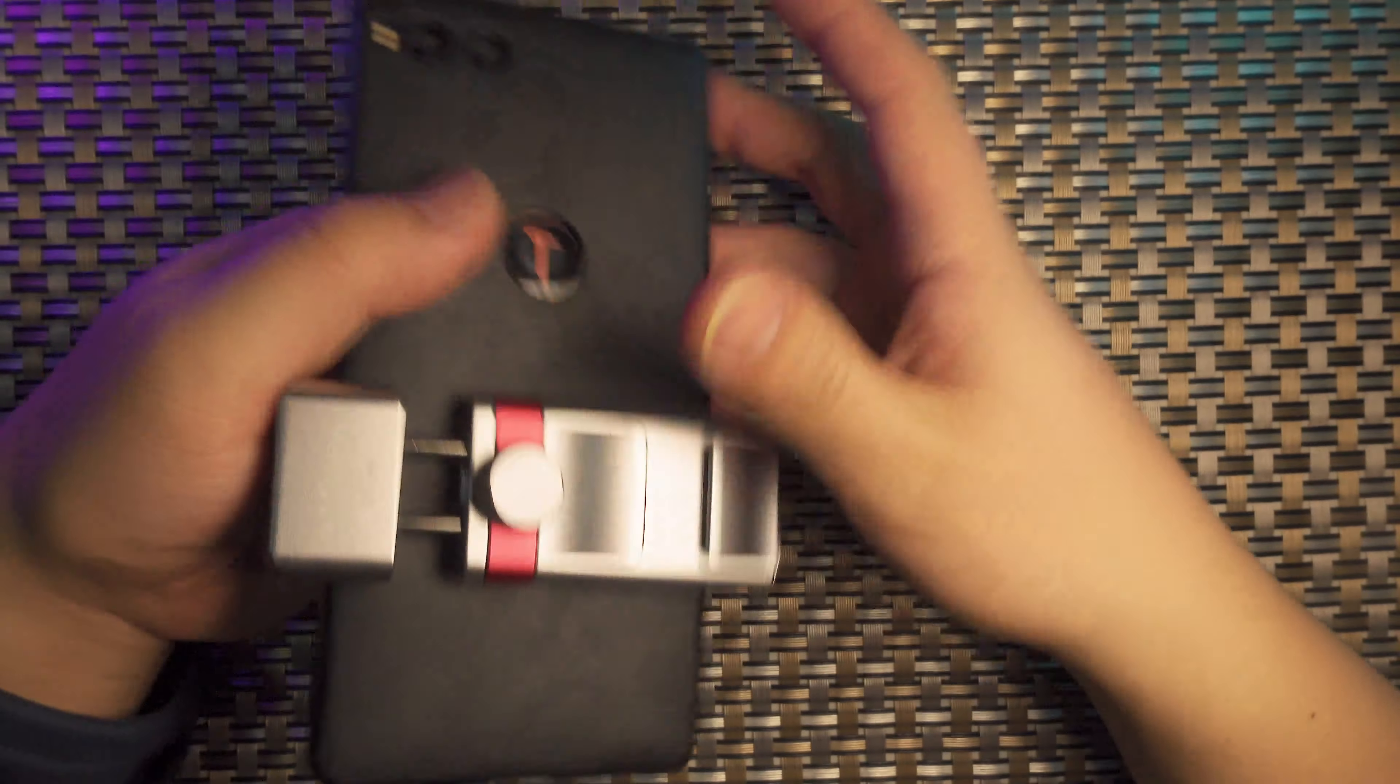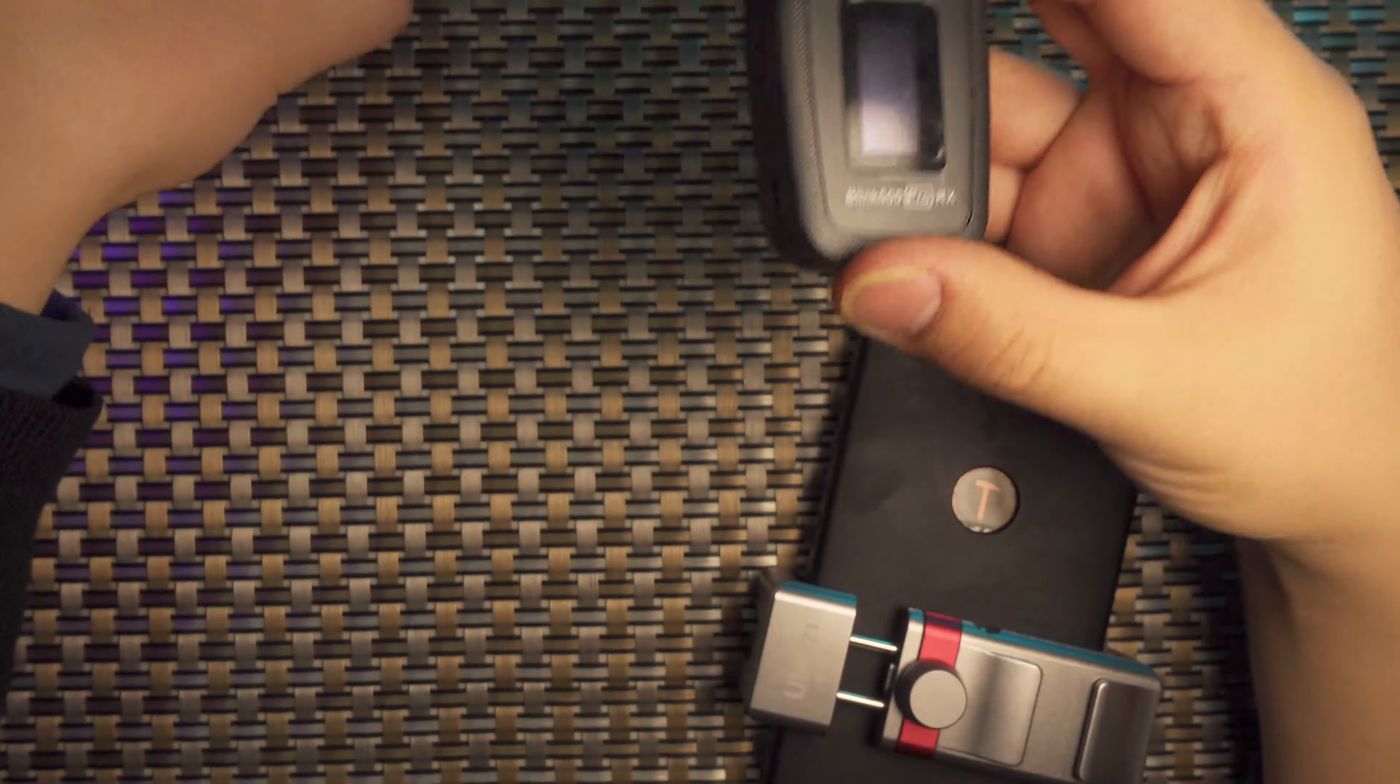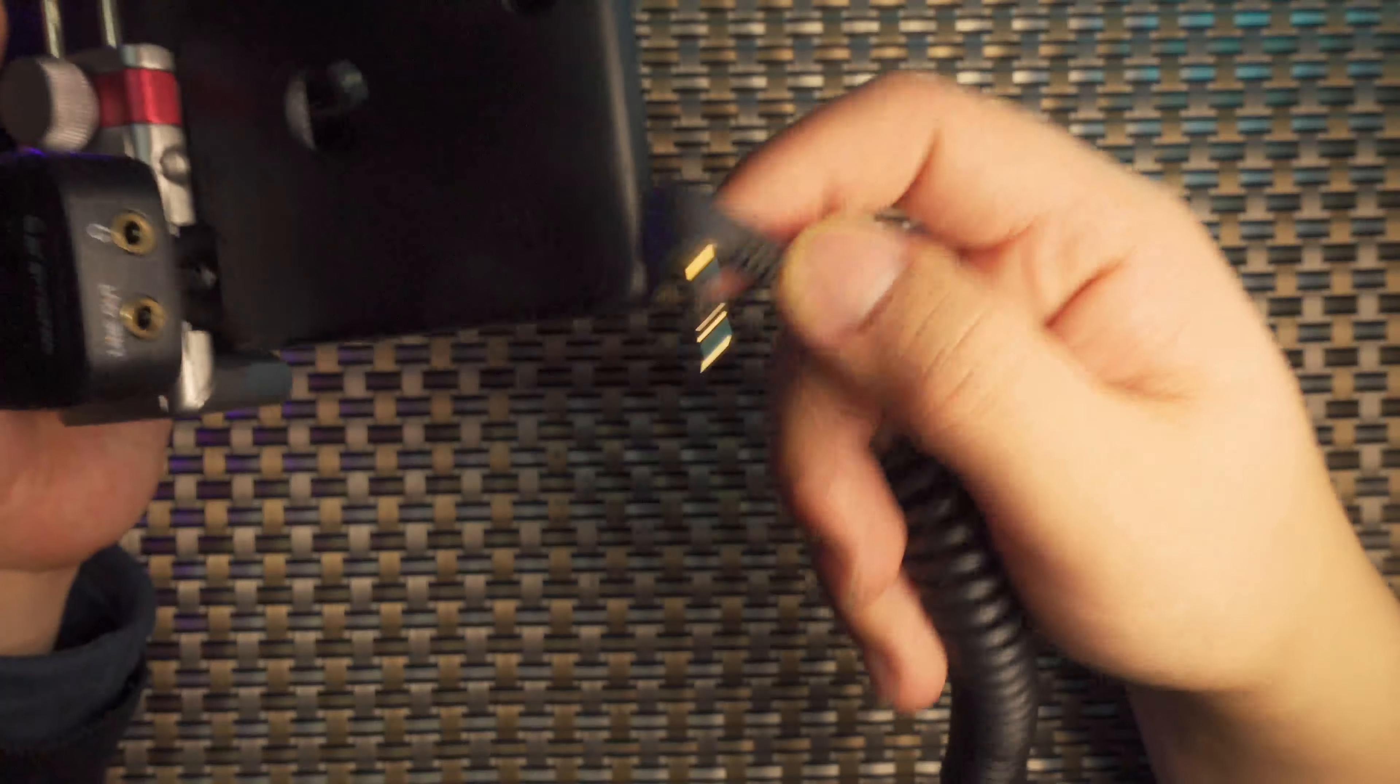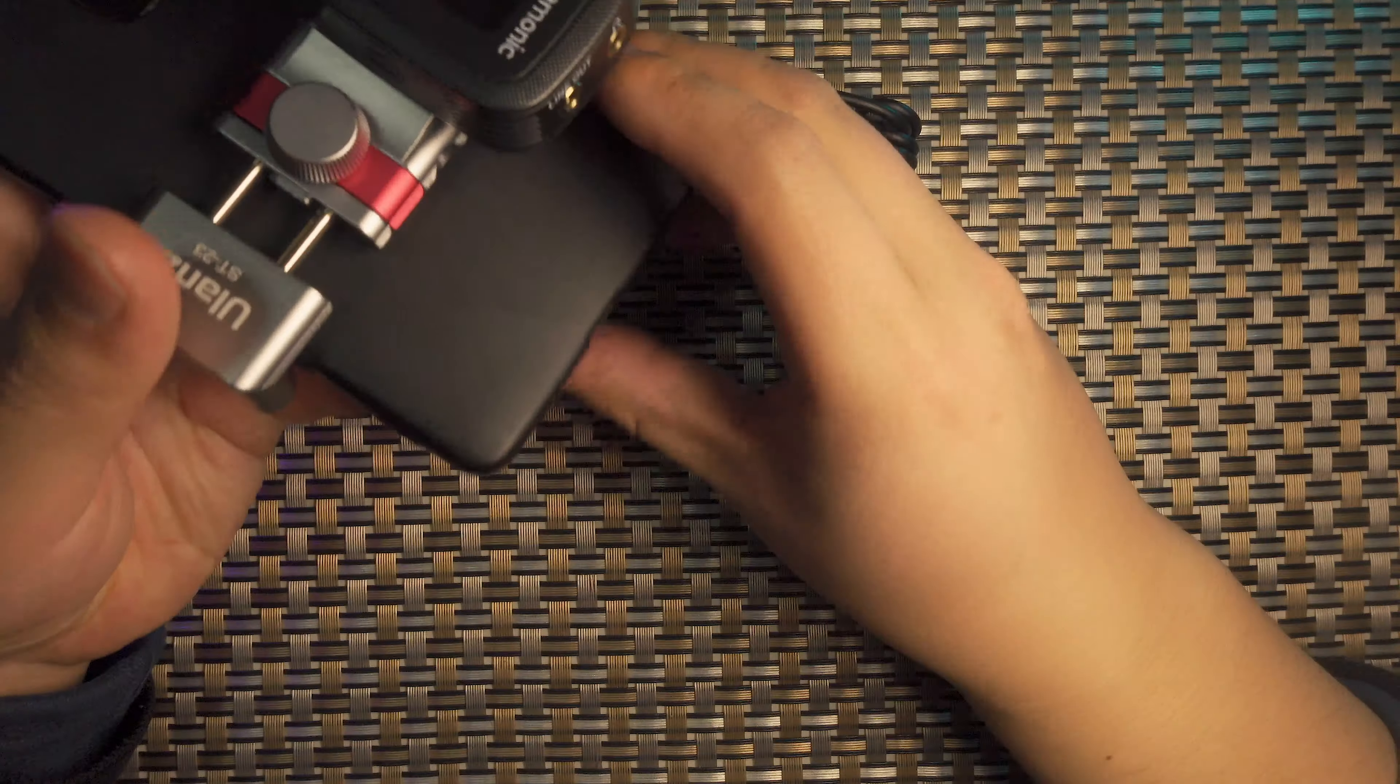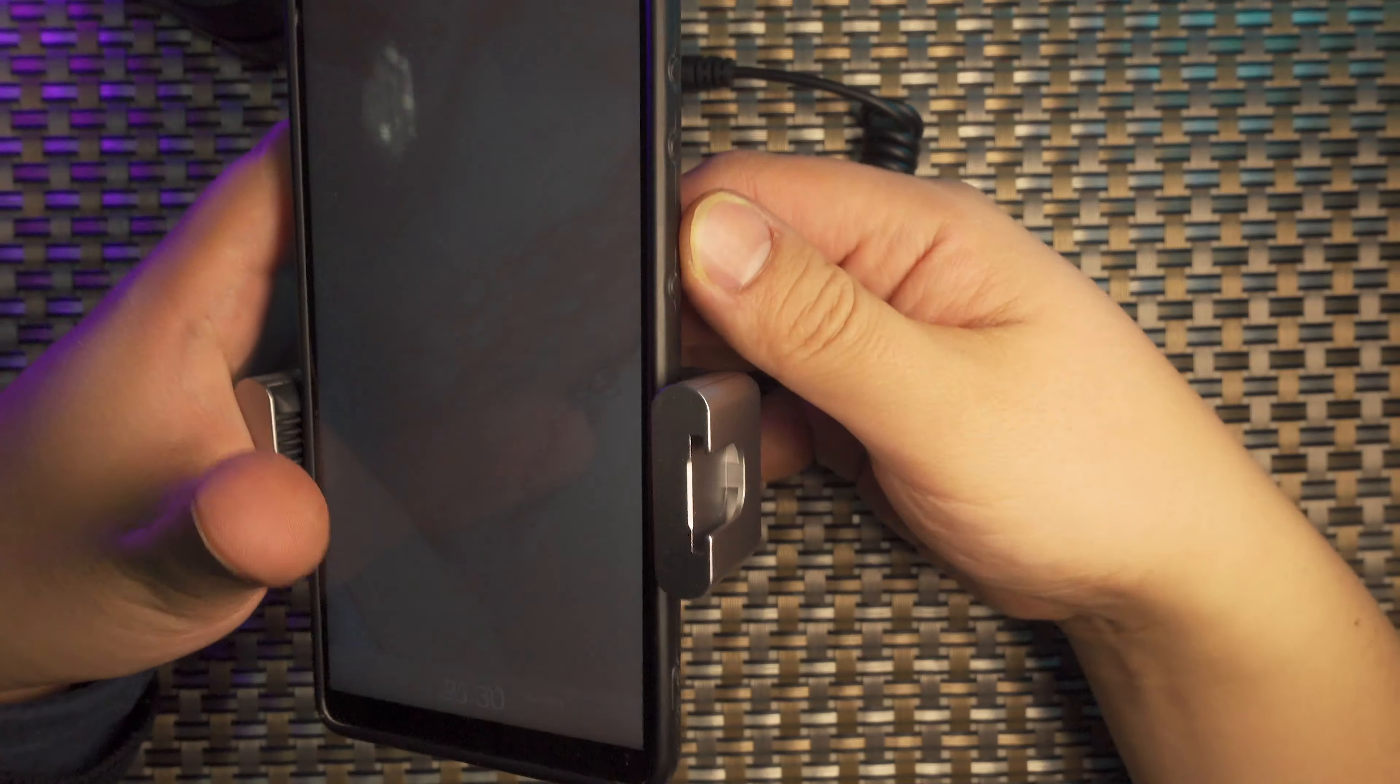Here you can see this is my Saramonic Blink 500 Pro B2. I can put the receiver module on the back of the ST23 phone clamp. With an external TRS cable and Type-C cable, I can connect this wireless system very elegantly with my cell phone. Put another light on the top to make this setup very unique and compact.